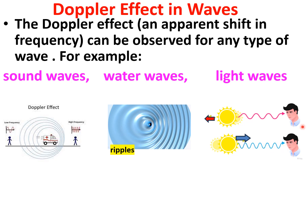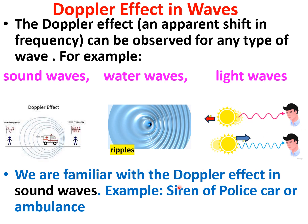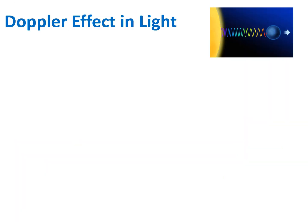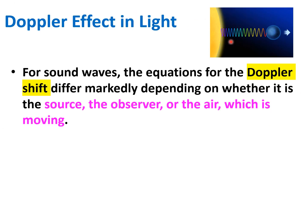When the source is coming towards the observer there is an increase in frequency, known as blueshift. We can see this effect in daily life with the siren of a police car or ambulance: as they approach us we hear a high pitch or high frequency, and as they move away there is a decrease in frequency.